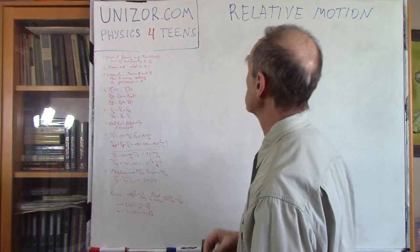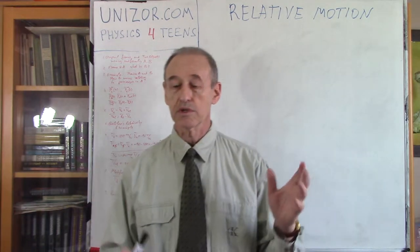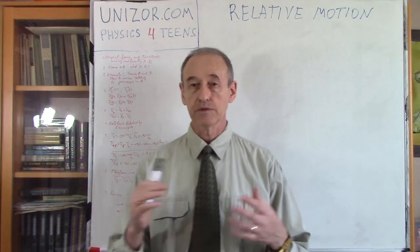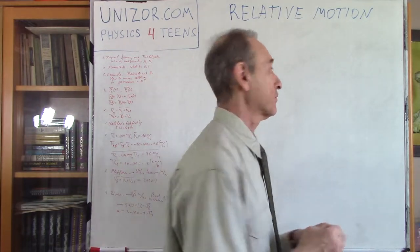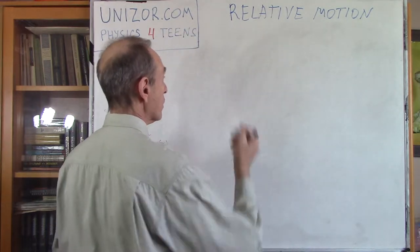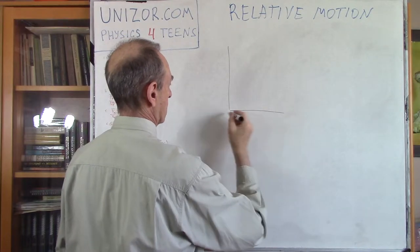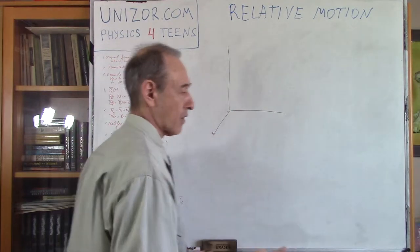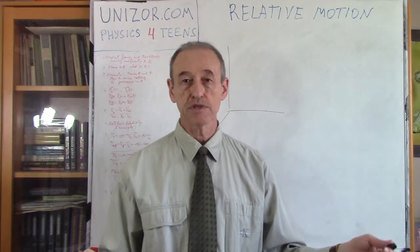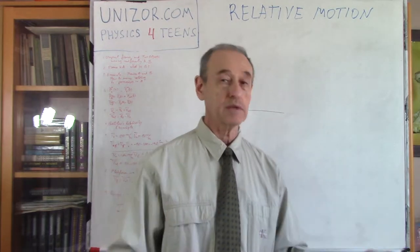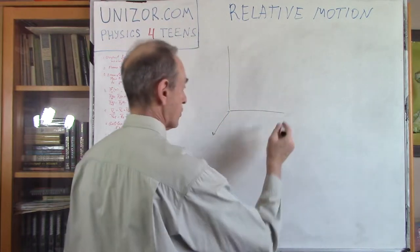Alright, so let's talk about relative motion — motion of one object relative to another. We consider a certain original frame of reference, fixed on the ground, which we consider to be inertial.